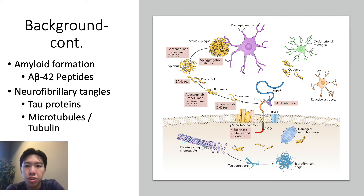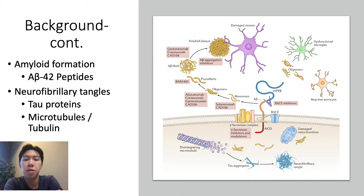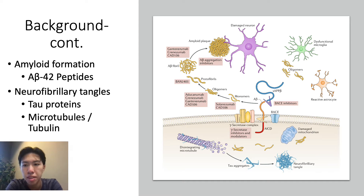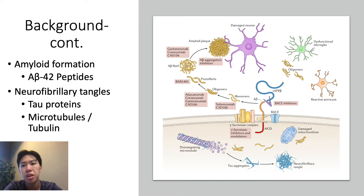These A-beta-42 peptides are formed by the cleaving of the amyloid precursor protein, or APP, at the beta and gamma sites by the base protease enzyme. They then form into monomers, then oligomers, then finally aggregate into plaques that later cause the neuronal loss in Alzheimer's.